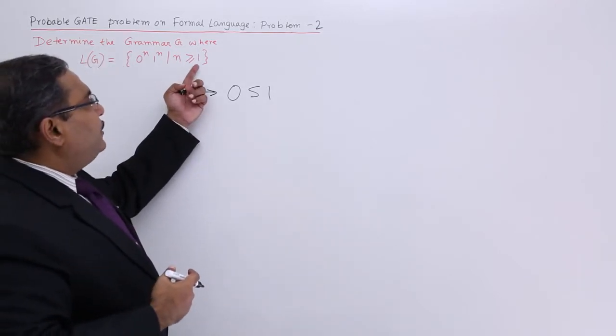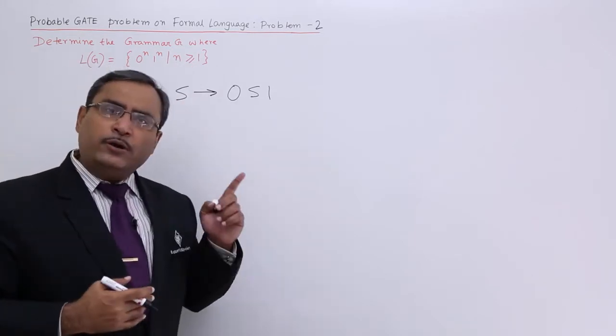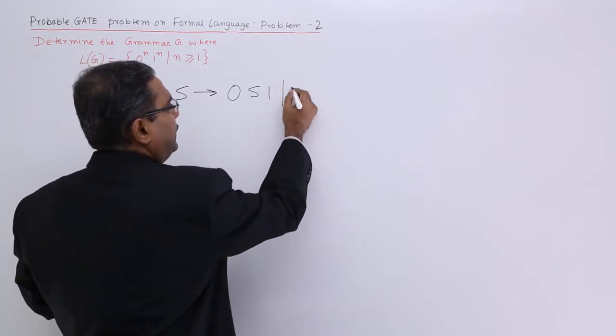Now in this way, but as we require at least 1 zero and 1 one should be produced, here I should be having 0 1.